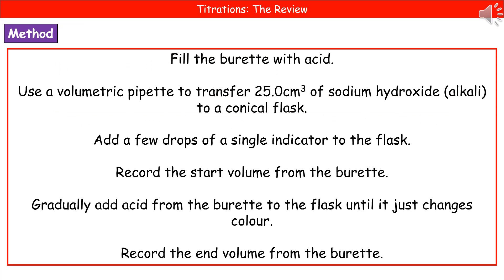In order to carry out a titration, we need to fill a burette with the acid we're using. We then use a volumetric pipette to transfer 25 centimetres cubed of our alkali to a conical flask. We add a few drops of our single indicator to the flask and give it a little swirl to mix it. You record your start volume from the burette by making sure that your eye level is with the bottom of the meniscus.